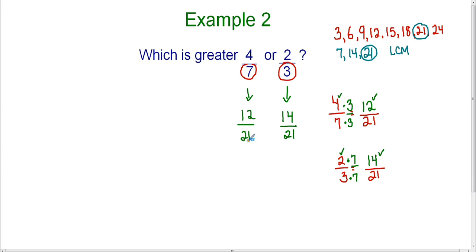Now that both of my fractions have the same denominator, I can compare them. I can just simply look at the numerator and tell which one is greater. Since 14 is greater than 12, I know that 14-twenty-first is greater, which means that two-thirds is greater. So two-thirds is greater than four-sevenths.